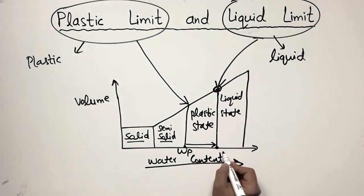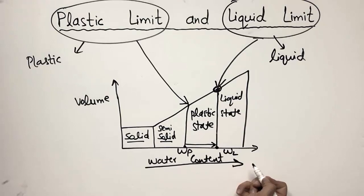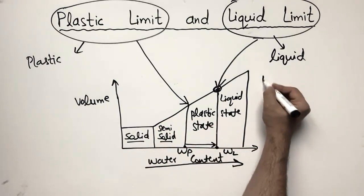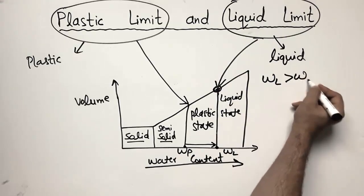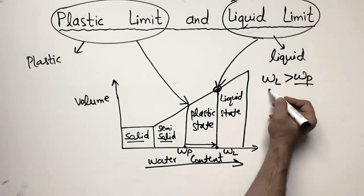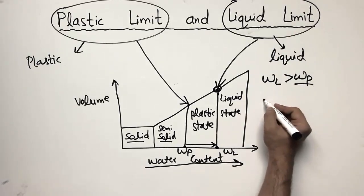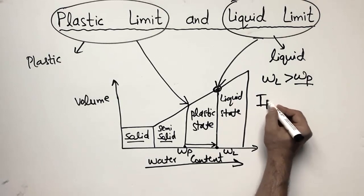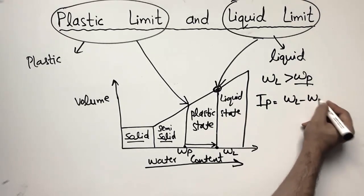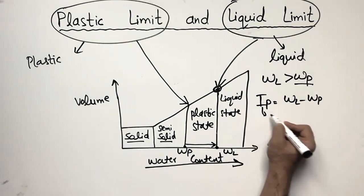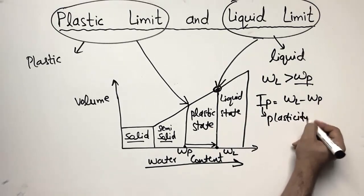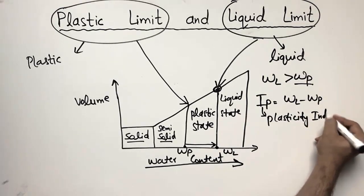We call this the WL, which is the liquid limit. The plastic limit is always less than the liquid limit, or we can say the liquid limit is always greater than the plastic limit. Because we achieve first the plastic limit and then we achieve the liquid limit. The difference between these two is called the plasticity index — liquid limit minus plastic limit gives a value we call the plasticity index, represented in percentage.